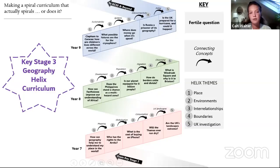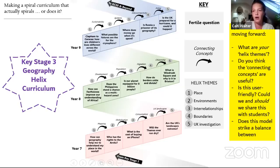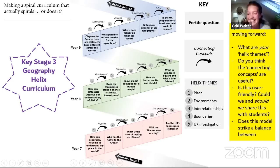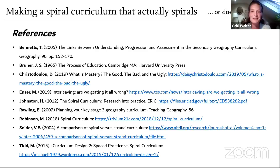Here is my newest curriculum — still a work in progress, so feedback is welcome. I thought carefully about my five helix themes: place, environments, interrelationships, boundaries, and UK investigation. I'll make those super explicit so we come back to and revisit them every single year to get all the benefits discussed. My questions moving forward: What are your helix themes? Are connecting concepts useful? Should we share this model with students?